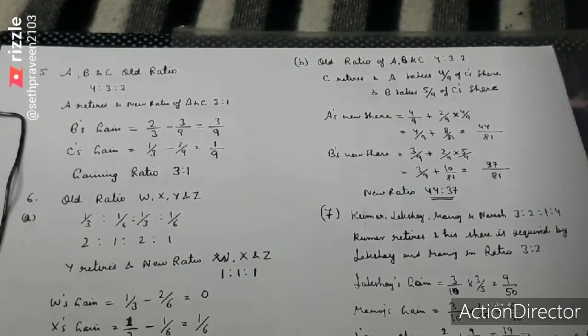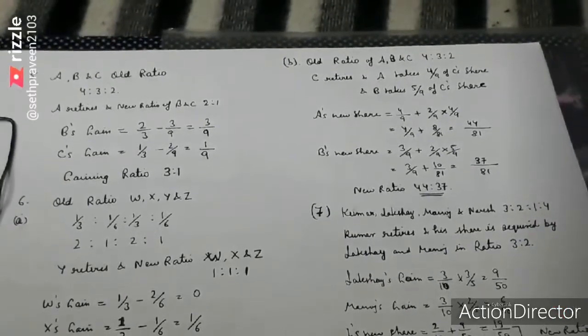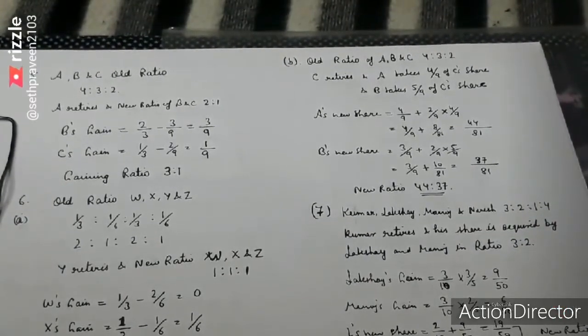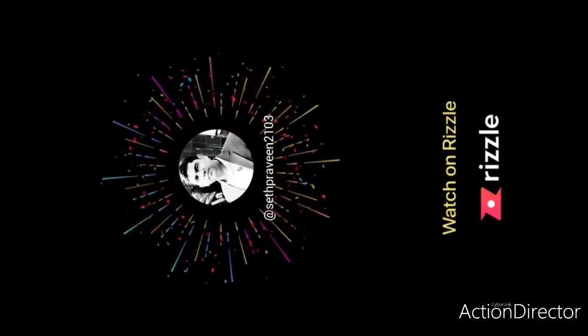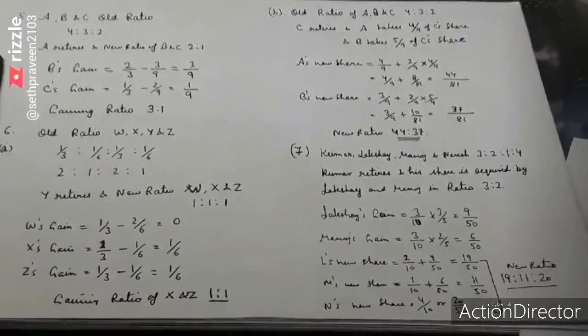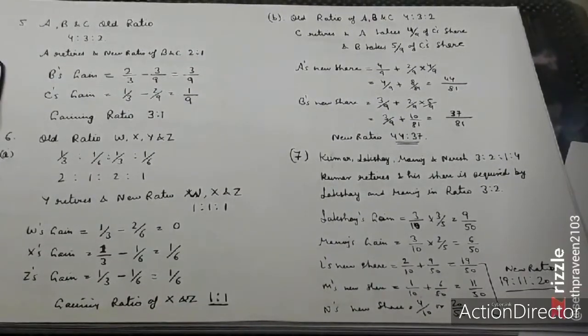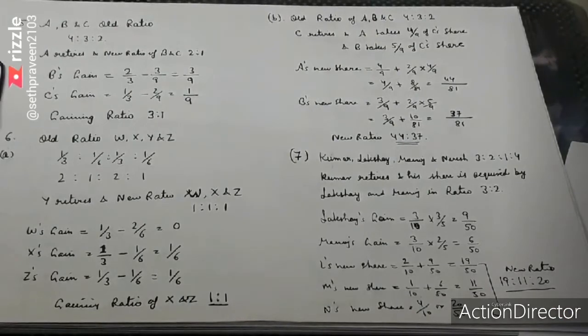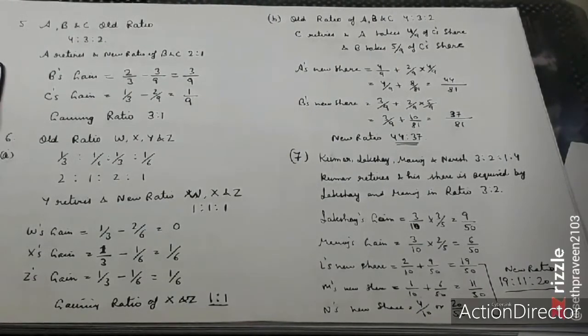Let's talk about question number 7. The old ratio was 3 to 1 to 2 to 4. When Kumar retired, Mohan and Sohan acquired his share in the ratio 3 to 2. Kumar's share is 1 by 10, so the ratio is 3 to 2.